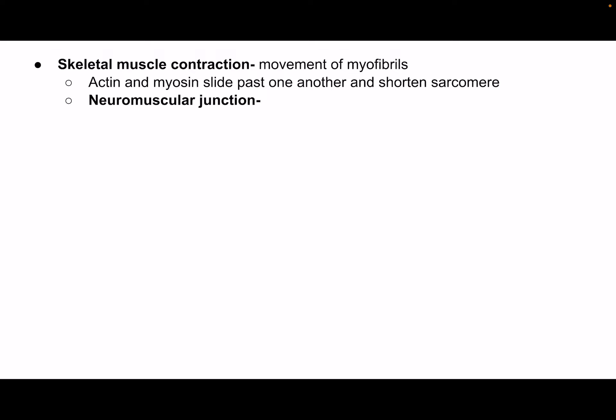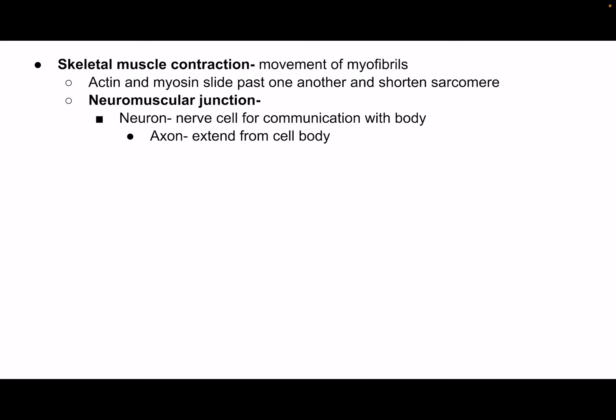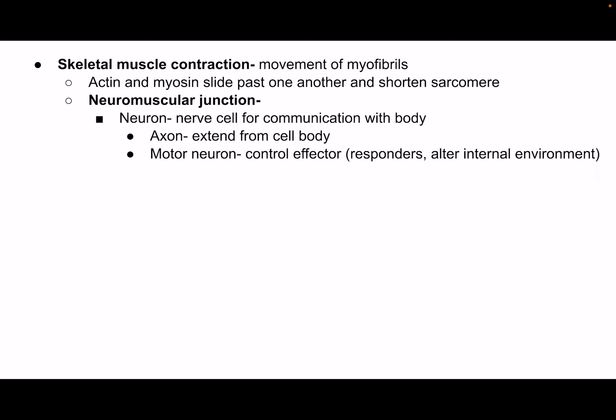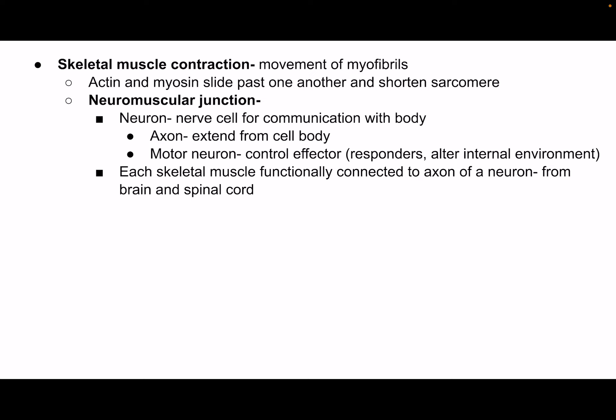It all starts at a place called the neuromuscular junction. A neuron can communicate signals throughout the body. The part we're most concerned with is the axon, which extends from the cell body and carries a message to what we want to affect — in this case, the muscle. We use motor neurons for muscle contraction. Each skeletal muscle is connected to an axon, and within your muscle — think your bicep — there are tons of different neuromuscular junctions that fire signals to get your muscle to contract.